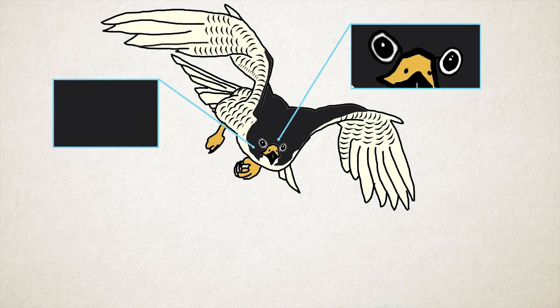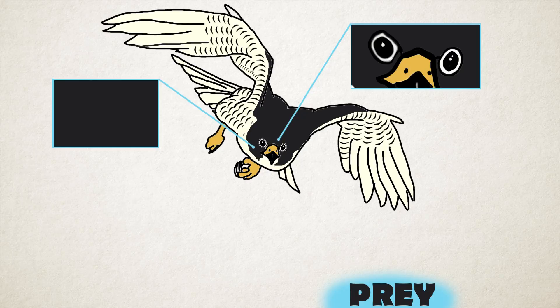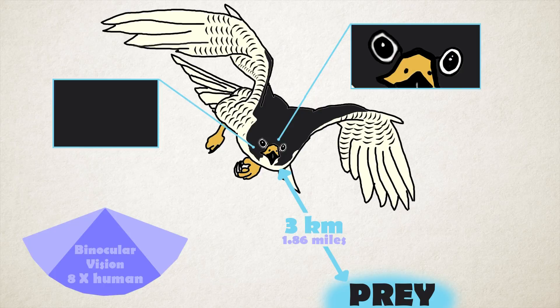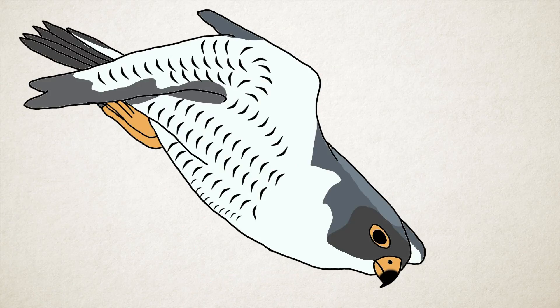With its forward-facing eyes, glare-reducing black face, the ability to rapidly focus on an object while in flight, and strong full-color binocular vision 8 times better than our own, these birds can see their prey from a distance of more than 3 kilometers. They also use their amazing speed,